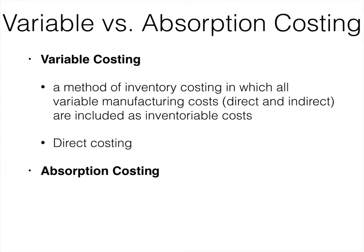Variable costing is a method where we value our inventory based on only variable costs — direct materials, direct labor, and variable overhead. So only those costs would be part of our product cost. We also call this direct costing.